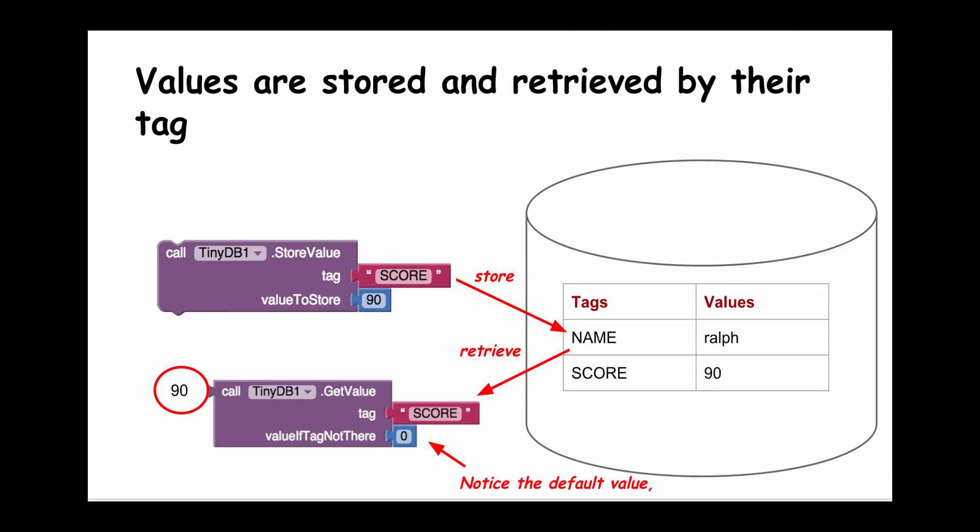Here's another example where we're going to store a number. In this case, I want to store somebody's score in a game. So my tag is going to be the word SCORE, and the value I'm storing is 90. Notice how a new row in the database is created with the tag SCORE and the value 90.